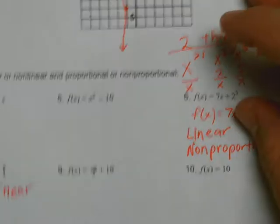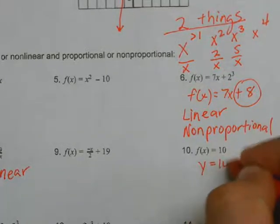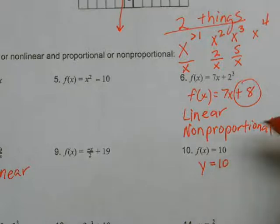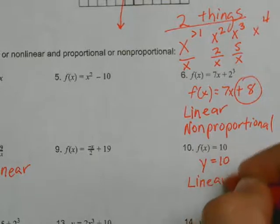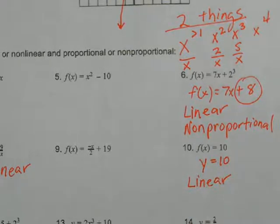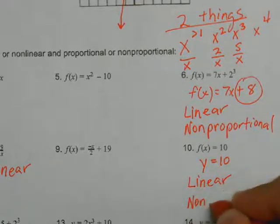Look at this, number 10, f(x) = 10. That's the same thing as y = 10. So is x in the denominator? No, because there is no x. Does x have an exponent greater than one? No, because there is no x. So therefore it is linear. And y = 10, and obviously the origin is not on it, so therefore it's going to be non-proportional.